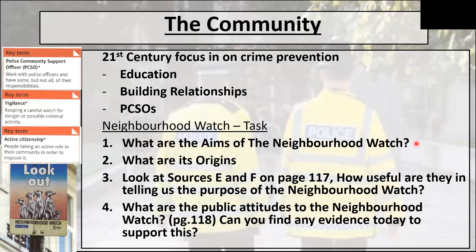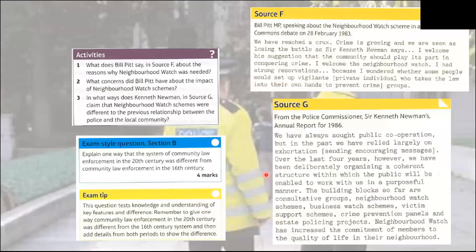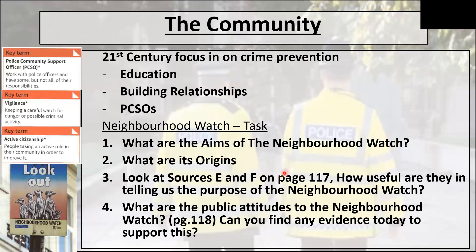Find out what the aims of Neighbourhood Watch are and what its origins are — make some appropriate notes. Then look at Sources E and F on page 107 and answer this question: how useful are they in telling us the purpose of Neighbourhood Watch? Don't forget to answer the question — you need to explore what the sources are telling us, but also say how useful they are in telling us the purpose. Is there any bias at all?